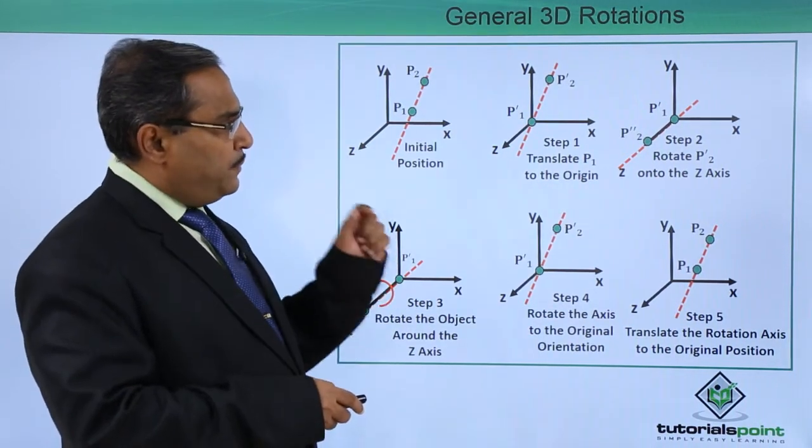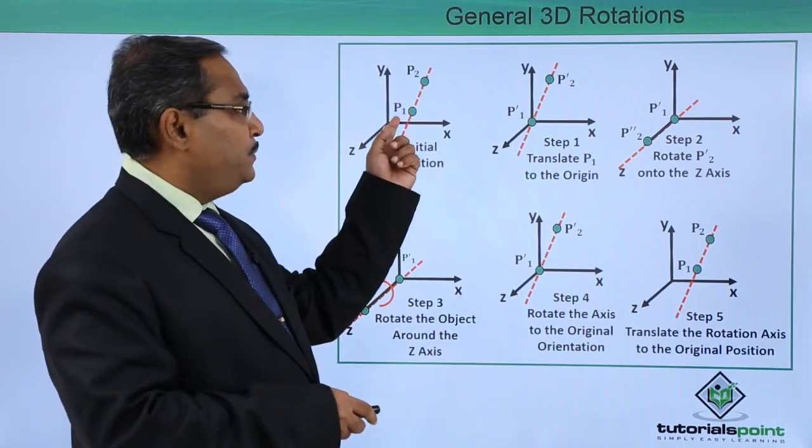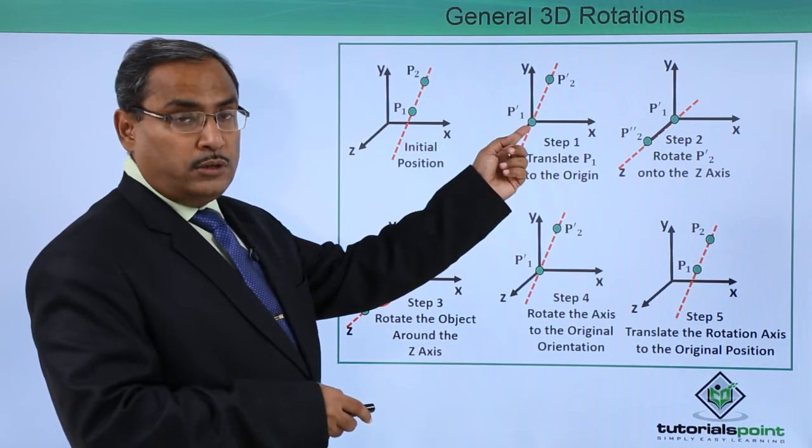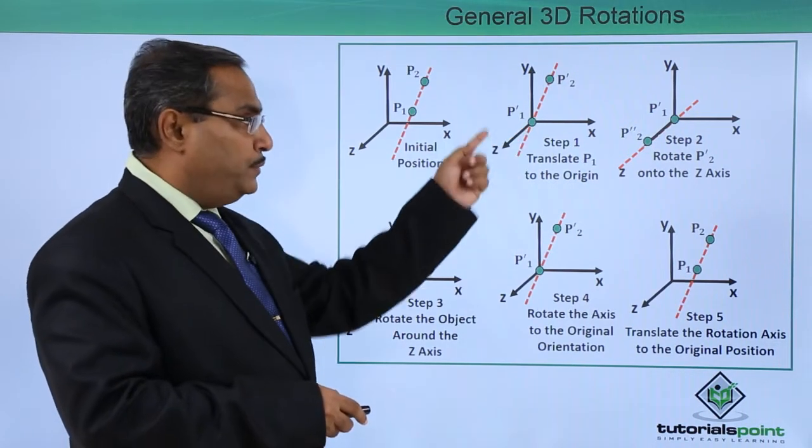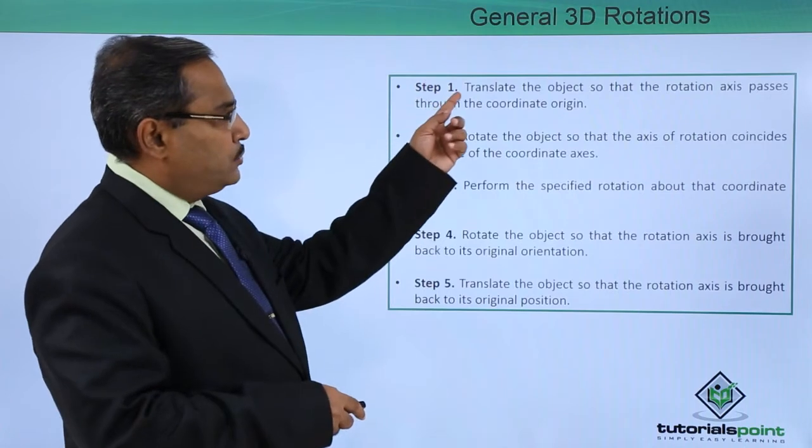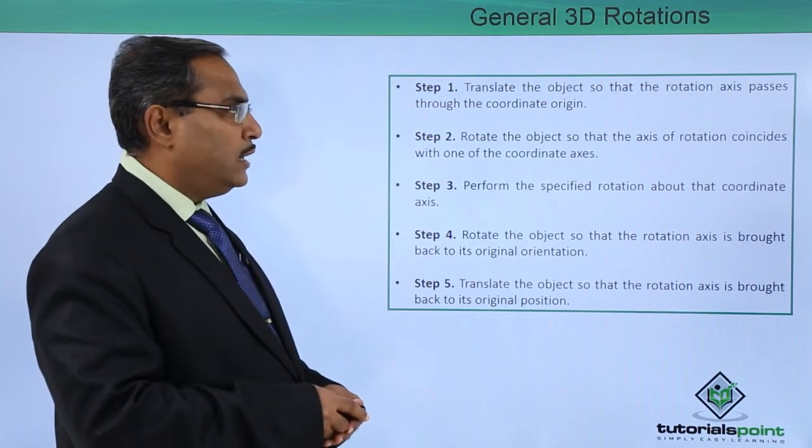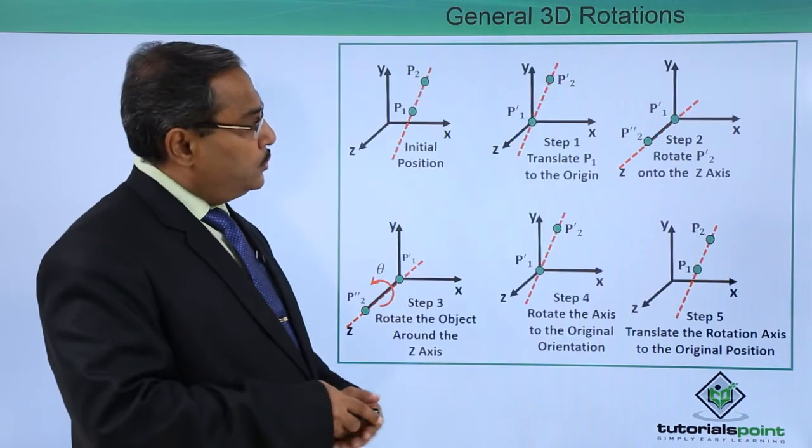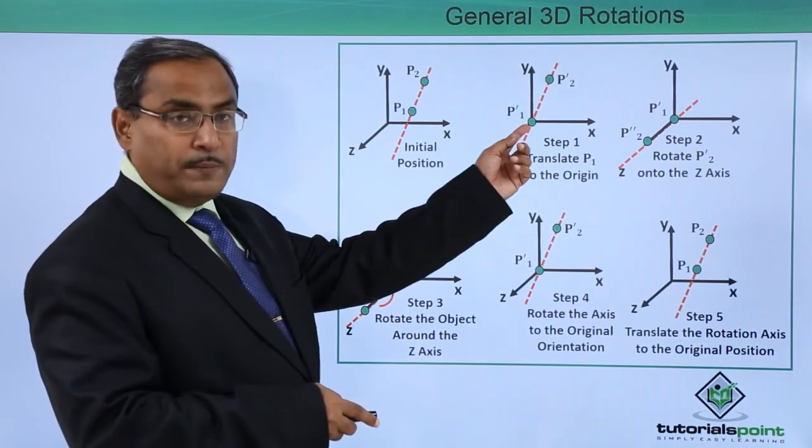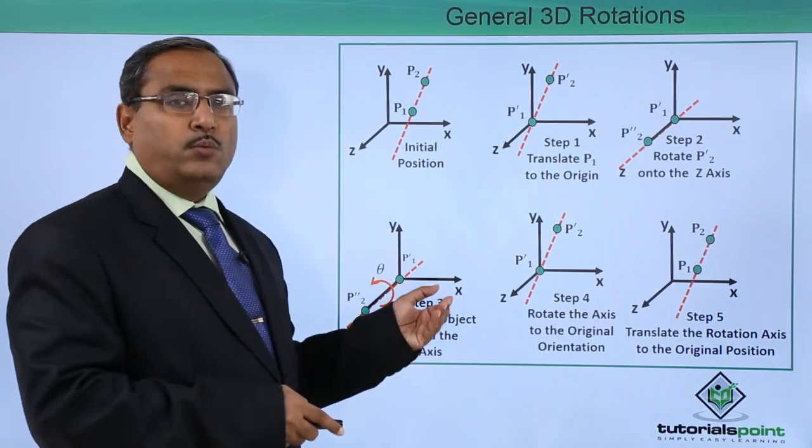What was step 1? Step 1 is that we are supposed to bring this point, here is this p1, which will coincide with the origin of this Cartesian coordinate. Let me repeat the same: translate the object so that the rotation axis passes through the coordinate origin. That is why this rotation axis is now passing through the coordinate origin. Here we require one translation.